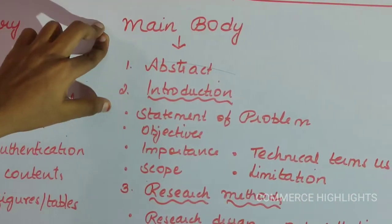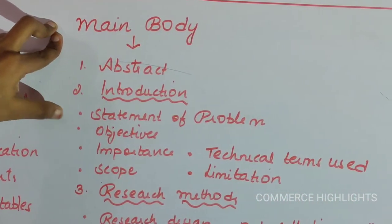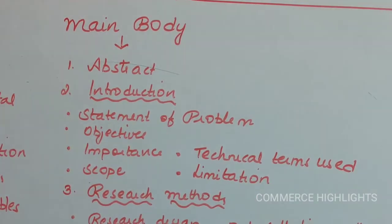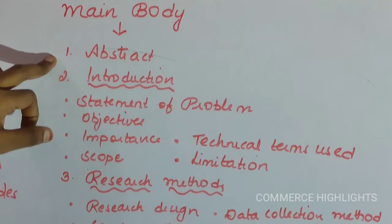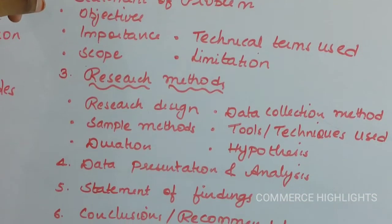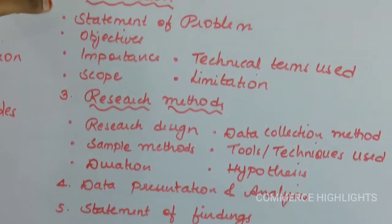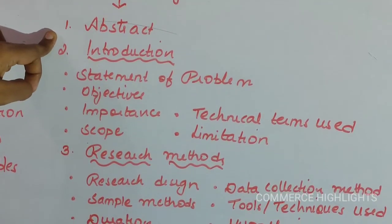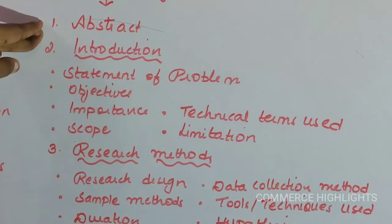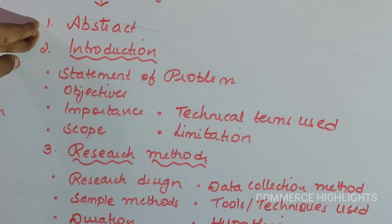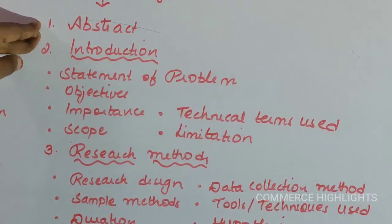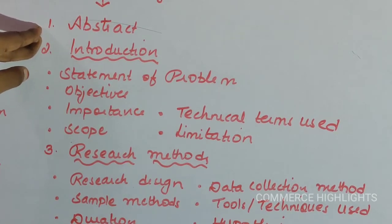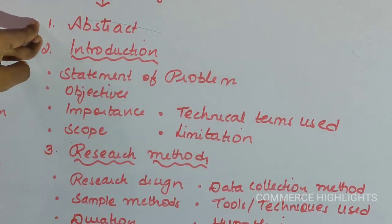Coming to the second section — the main body or textual section — this section should contain seven things. The first is the abstract, written at the start of a research report. The abstract is a summary of what you have done, mainly including the findings and analysis of your research. It should be very simple and limited to 200 to 250 words, because it attracts the reader's attention and gives a glance of whether they need to read the full report.